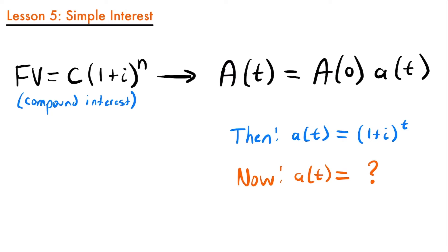So the question is: what does our accumulation factor for simple interest look like? In this case, it's not going to be 1 plus i to the t power — it's going to be 1 plus i times t, where t is measured in years. This is the difference between compound and simple interest: instead of taking the quantity 1 plus i to the number of years, you multiply that number of years by your simple interest rate.